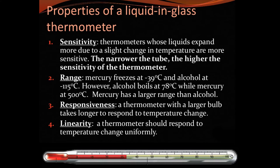Let's talk about some more terms related to thermometers. For example, sensitivity. Thermometers whose liquid expands more due to a slight change in temperature are more sensitive. The narrower the tube, the higher the sensitivity of the thermometer. Range means the minimum and the maximum measured by the thermometer. If you remember the last slide, we studied that the minimum was minus 10 degrees Celsius and the maximum was 110 degrees Celsius.